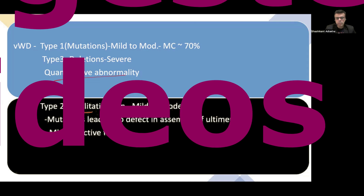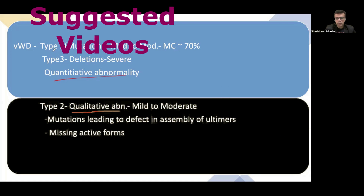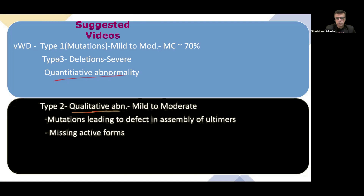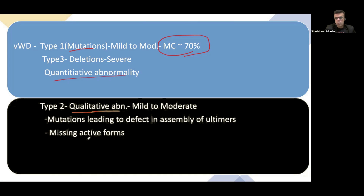Von Willebrand disease can be quantitative (deficiency of Von Willebrand factor) or qualitative. Quantitative abnormality includes Type 1 and Type 3. Type 1, due to mutations, causes mild to moderate clinical manifestations and accounts for almost 70% of cases. Type 3 involves deletion and causes severe manifestations. Type 2 presents with mild to moderate manifestations due to a mutation causing defective assembly of multimers — the active high-molecular-weight multimer form of Von Willebrand factor is missing in Type 2.